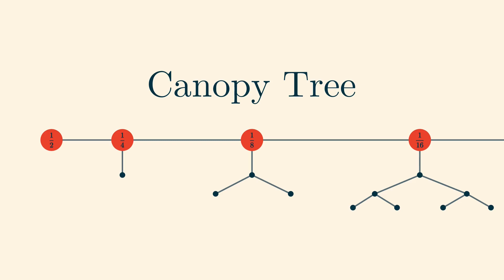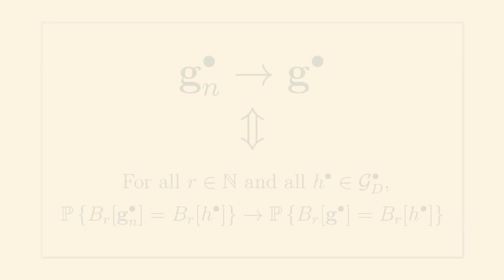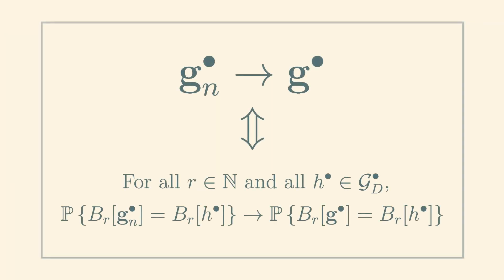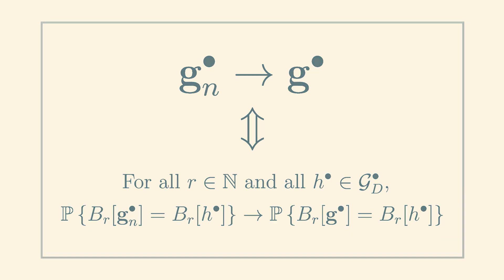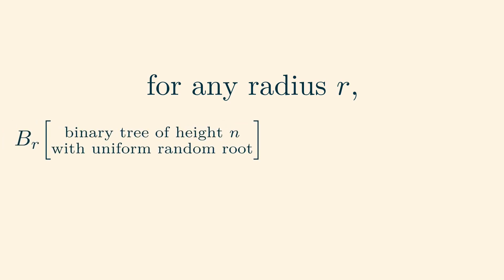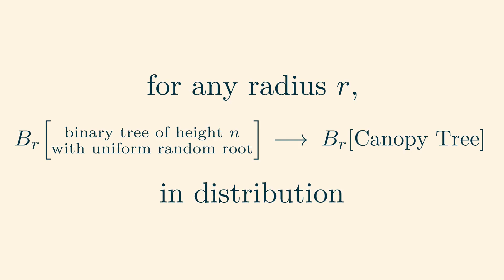So far we have only conjectured that the canopy tree is the limit of the finite binary trees. To actually prove that this is the limit, we must refer back to the definition of convergence for random rooted graphs. In particular, we must show that for any radius r, the distributions of the r-balls in the finite binary trees converge to the distribution of r-balls in the proposed graph limit.